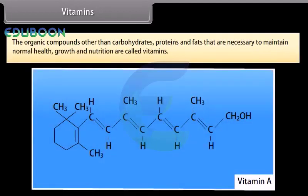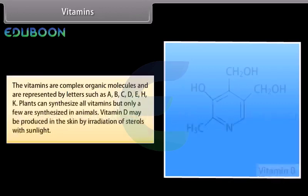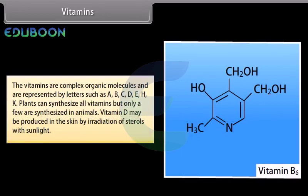The organic compounds other than carbohydrates, proteins and fats that are necessary to maintain normal health, growth and nutrition are called vitamins. Vitamins are a group of organic compounds required in very small amounts for the healthy growth and functioning of animal organisms. Their absence causes specific deficiency diseases. The vitamins are complex organic molecules represented by letters such as A, B, C, D, E, H and K. Plants can synthesize all vitamins but only a few are synthesized in animals. Vitamin D may be produced in the skin by irradiation of sterols with sunlight.